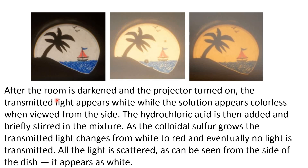As you add hydrochloric acid, colloidal sulfur forms and grows. Initially, shorter wavelengths of light are scattered and longer wavelengths are transmitted, so the color projected on the screen appears yellow. Then yellow is scattered and it appears orange. As the colloidal sulfur particles grow, longer wavelength light also scatters and it becomes red. Finally, all lights are scattered and the transmitted light becomes black. The transmitted light changes from white to red, and eventually no light is transmitted. If you see from the side, it will appear white.